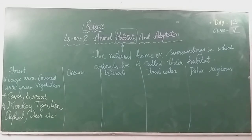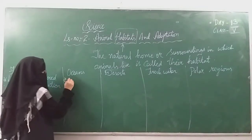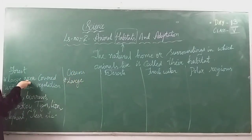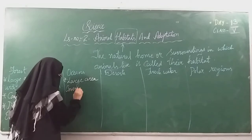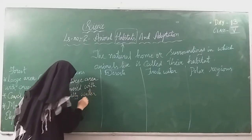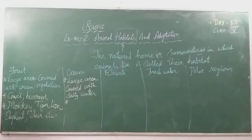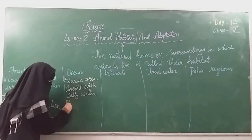Oceans are large water bodies of salty water. Oceans are the world's largest habitat. They provide a home to a large number of animals such as fish, starfish, dolphins, octopus, and turtles. Oceans are covered with salty water, unlike freshwater bodies.